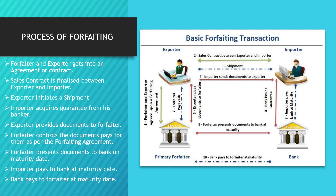Then the importer obtains a guarantee from his bank. The bank guarantees to the importer, which may be in the form of a promissory note or letter of credit — that is point number four. Then the exporter gives documents to the forfeiter. That document is passed from importer to exporter and exporter to the forfeiter — points five and six. Then the forfeiter controls the document and pays for them as indicated on the forfeiting agreement — that is point number seven.